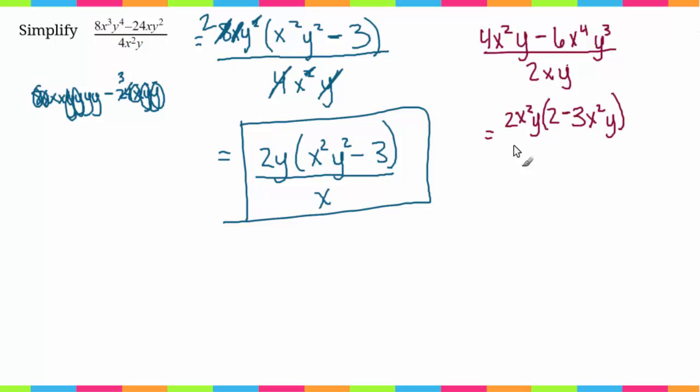So 6 divided by 2 is 3, x to the fourth divided by x squared is just x squared, and y cubed divided by y is y squared. And then this is going to be all over 2xy. So now I can go ahead and simplify this way. So the 2s are going to cancel out, the x is going to cancel with one of these x's, and the y's are going to cancel.